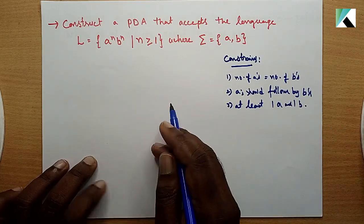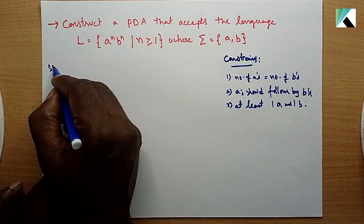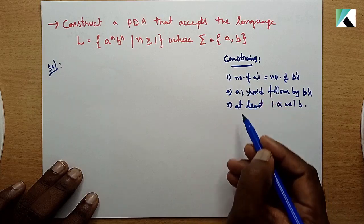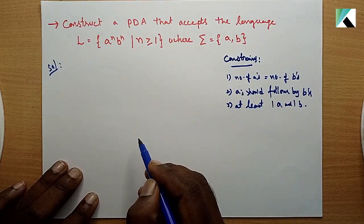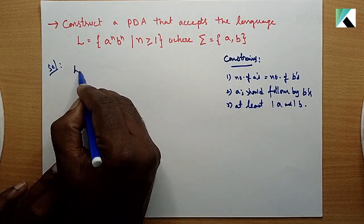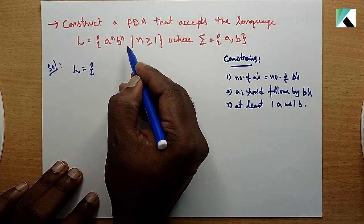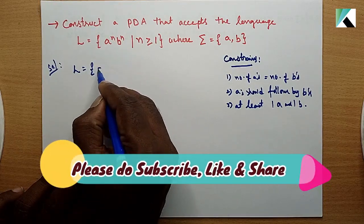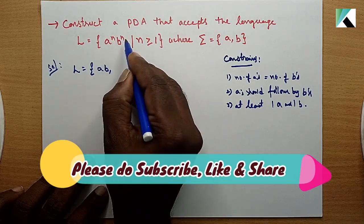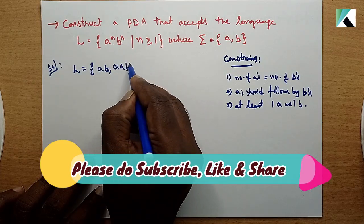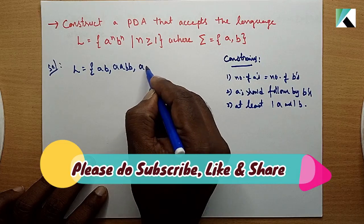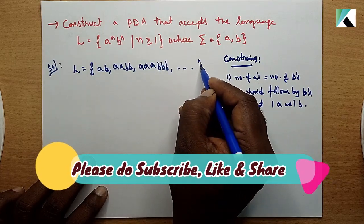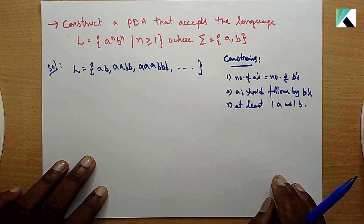In the solution, first let's frame the logic. The language L = a^n b^n: when n=1 we get AB, when n=2 we get AABB, when n=3 we get AAABBB. Likewise, we have a number of strings in the given language.